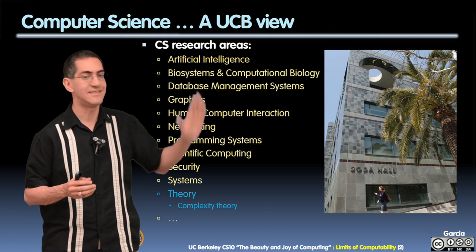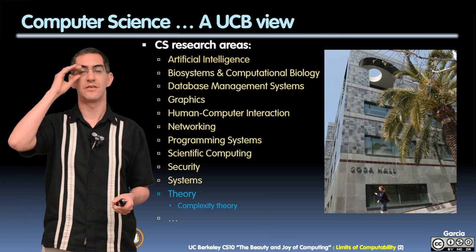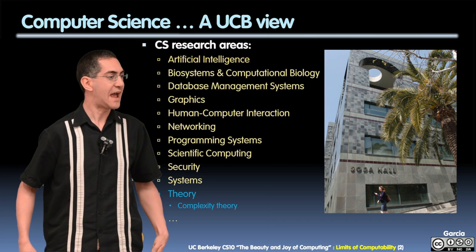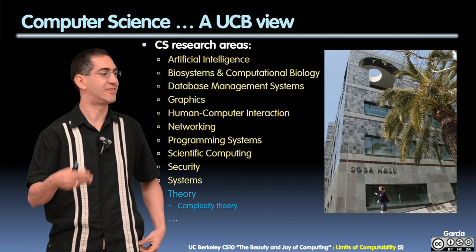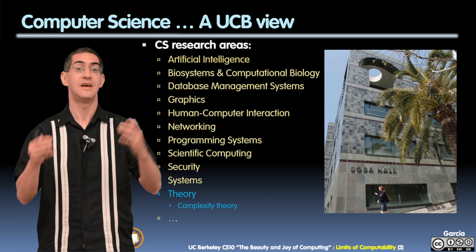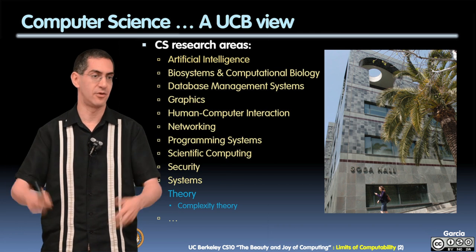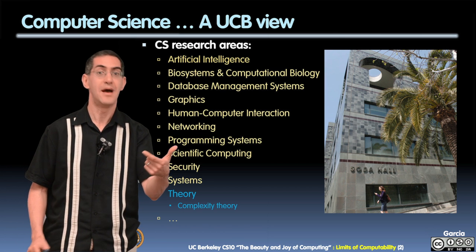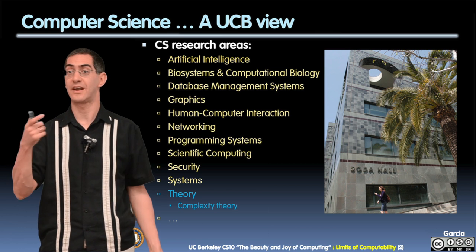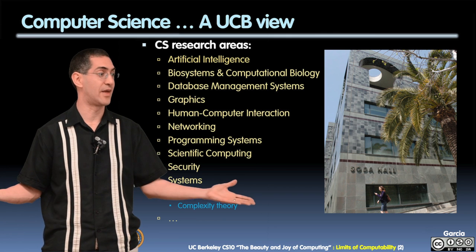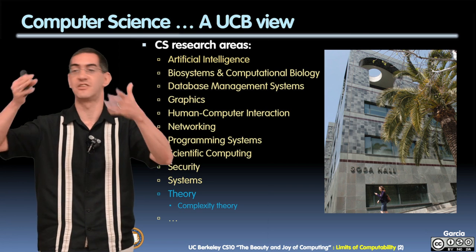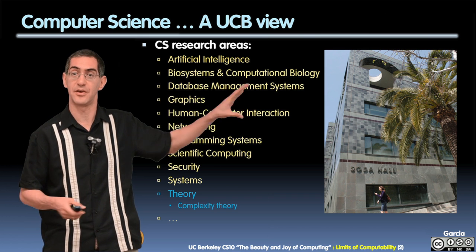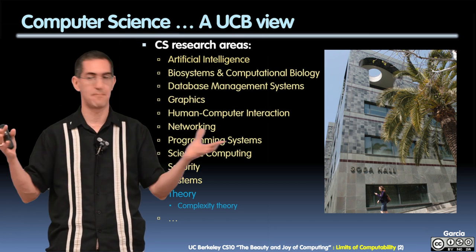So what we're doing today is the limits of computing. We realized, as we were building this course, that people — non-majors coming to computing fresh — may think that computers are perfect, that they can do things infinitely fast and have infinite storage. Hopefully from Blown to Bits you realize things aren't infinitely fast and we don't have infinite storage. We also can't represent things perfectly. Today the topic is limits: what are the limits of not only what you can represent and store, but also what you can compute? This topic is called complexity theory, which is a subfield under the CS area of theory.